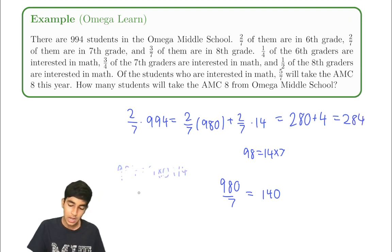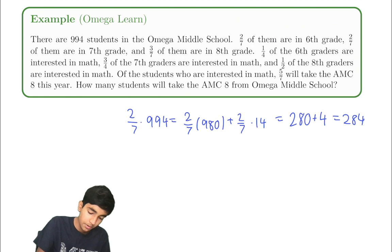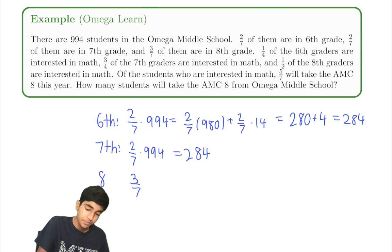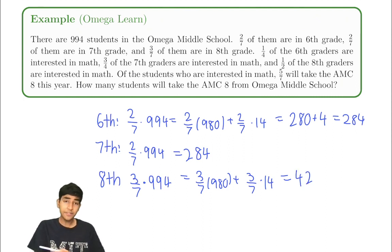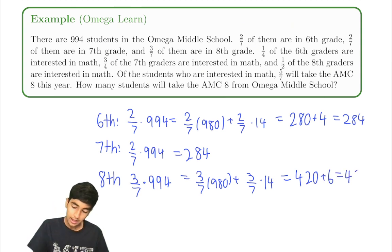Now, how many seventh graders? That's also going to be 2 sevenths of 994, which is also 284. Now, what about eighth graders? So this is six, seven, eight. Three sevenths of eighth graders. So three sevenths times 994. Remember how 994 was 980 plus 14. So we can rewrite it like that. And this gives three sevenths times 980. That's 420. Three sevenths times 14. That's 42 divided by seven, six. 426 eighth graders.